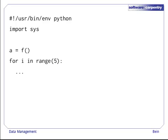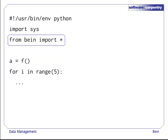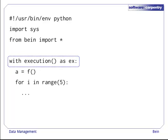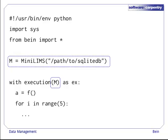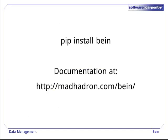Bind requires very few changes in how you write your scripts. You add 'from bind import star' to the imports at the top of your script. You wrap the top level of your calculations in an execution block, and you attach the execution block to a mini limbs to track the programs you run and the files you create. Bind is written in pure Python. You should be able to install it on any system with a functional Python installation with no more than 'pip install bind'. It has extensive documentation including a tutorial and a section on advanced usage which covers the idioms which make bind really powerful.